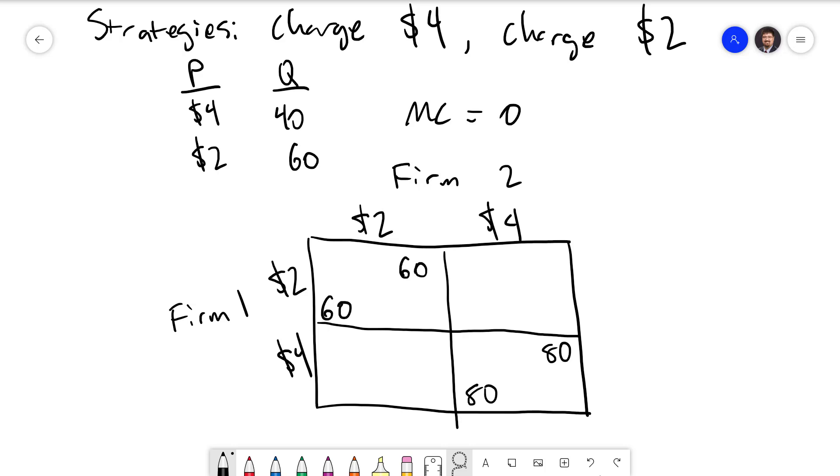If firm 1 charges $4 and firm 2 charges $2 then firm 2 will take the entire market at the lower price. Firm 1 will sell nothing. Firm 2 will make a profit of $2 times 60 units or 120. And then the opposite would happen in the other case where firm 1 undercuts.